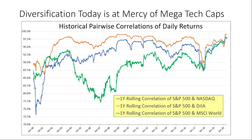Let's take a look at this chart. What we're looking at here are three different correlations with the S&P 500. This chart goes back 20 years, and we calculate these correlations using the last one year's worth of historical data to give us a correlation estimate today.